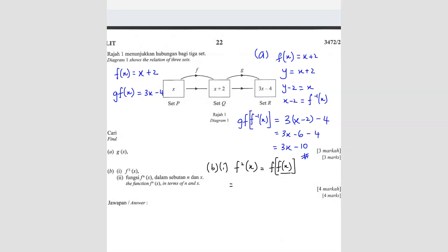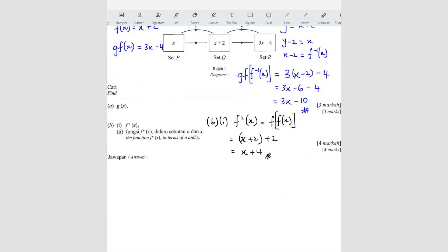So that means you're substituting fx as the object of f. So it's going to be f plus 2 plus 2 again. So x plus 4. Done.